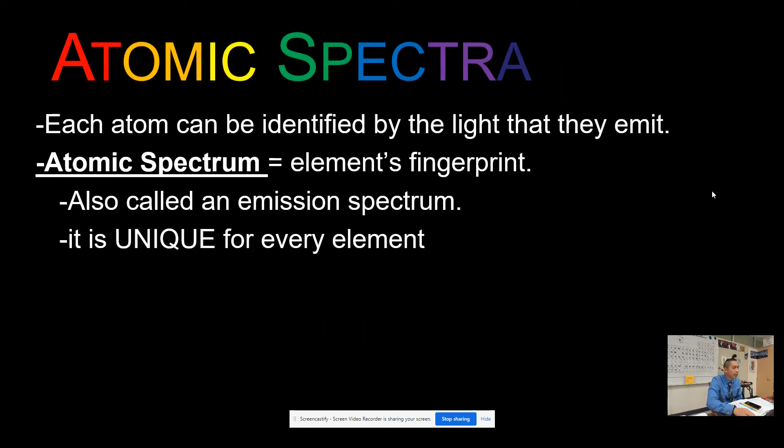Each atom can be identified by the light that it emits. You can think of the atomic spectrum as an element's fingerprint. Just as humans have unique fingerprints, all elements have a unique signature as well. It's also called an emission spectrum, and the key idea is that it's unique for every element - every element will absorb and emit different colors of light.